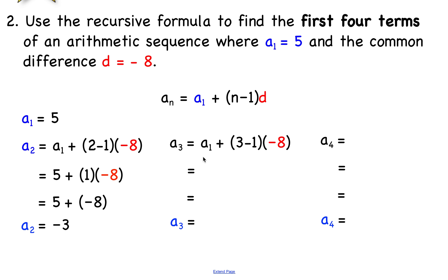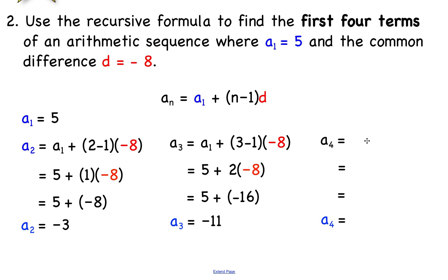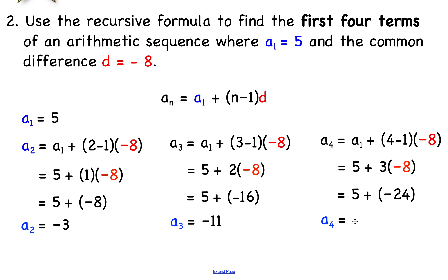For a sub 3, we use a sub 1 plus 3 minus 1 times d, so n is 3, giving 3 minus 1 equals 2. Two times negative 8 is negative 16, and 5 plus negative 16 is negative 11. For the fourth term, n equals 4, so 5 plus 3 times negative 8 equals 5 minus 24, which gives negative 19. The first four terms are 5, negative 3, negative 11, and negative 19.